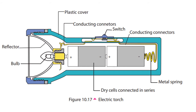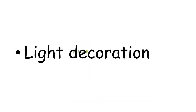The dry cells are connected in series. The dry cells, bulb, metal spring, and connecting connectors of the switch are connected with each other. The circuit is open because of the switch, so the bulb does not light. When the switch is pushed forward, the gap between the connecting connectors is closed and the bulb is lit.